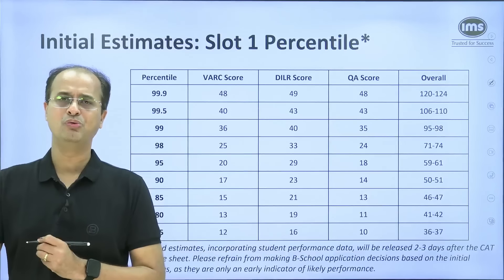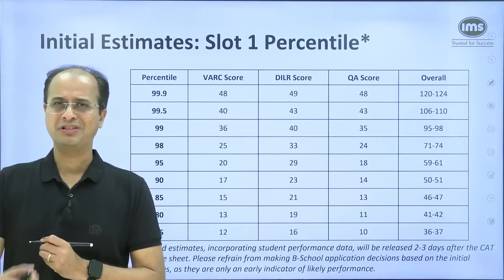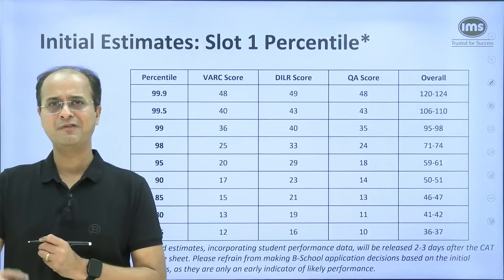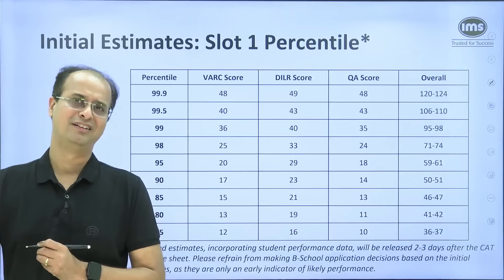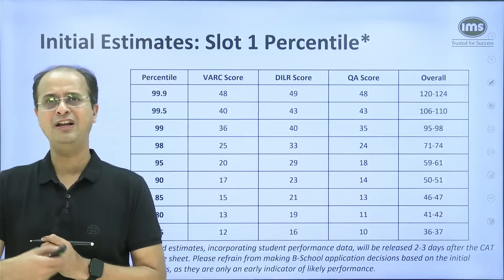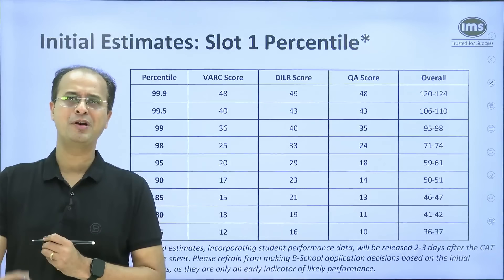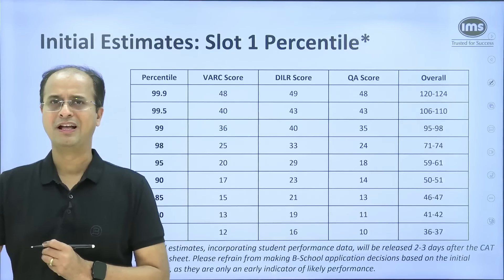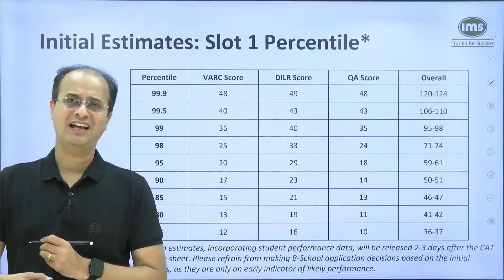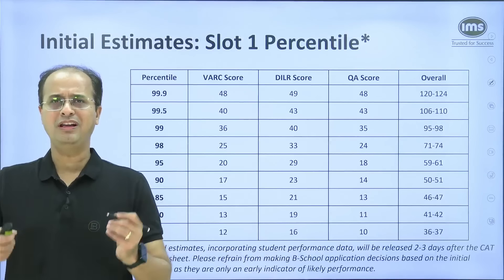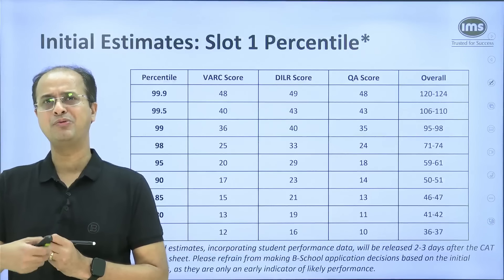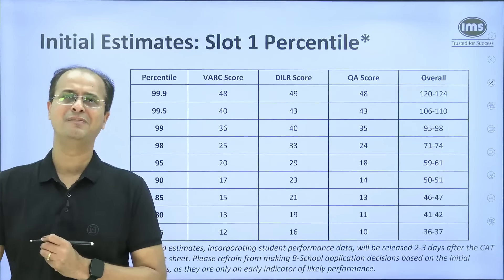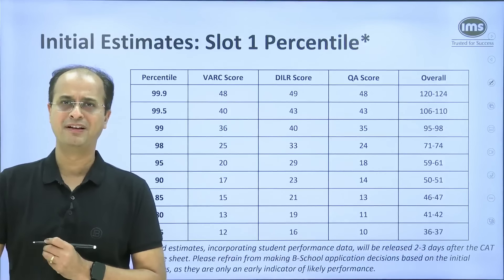When it comes to the QA section, again it was simpler compared to last year — arithmetic was back as a major topic. People will be able to attempt more questions in QA. Hence our overall estimate for the scores required to reach a particular percentile, compared to last year, is going to be up.